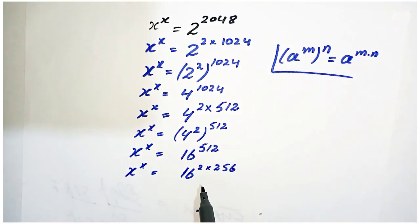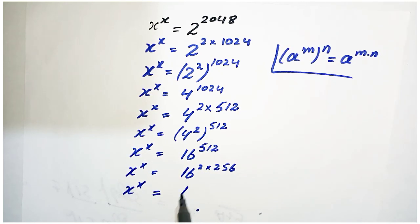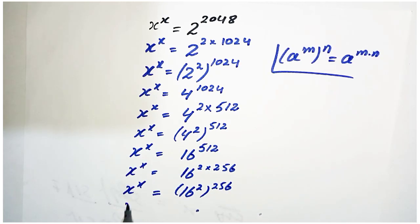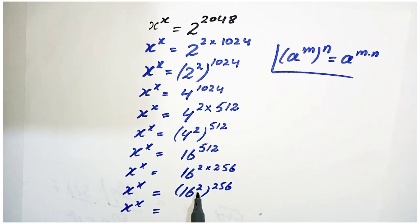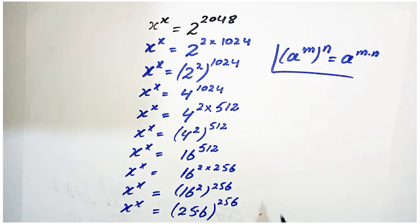Applying the power rule once more: x^x = (16^2)^256. Since 16^2 = 256, we get x^x = 256^256.